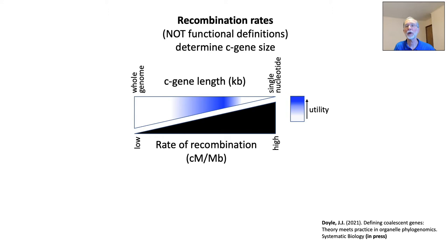In that example, recombination split a functionally defined gene into two C genes. With high enough recombination, every nucleotide of a gene may have a different history, maybe a separate C gene. At the other end of the spectrum, as the rate of recombination decreases, multiple linked molecular genes share the same history, comprising a single C gene. With no recombination, the entire genome can be a single historical unit, a single C gene. It is the amount of recombination, not functional definitions, that determines the size of the C gene.